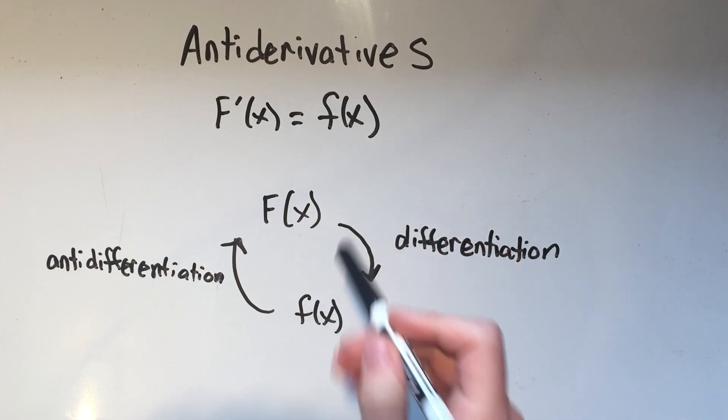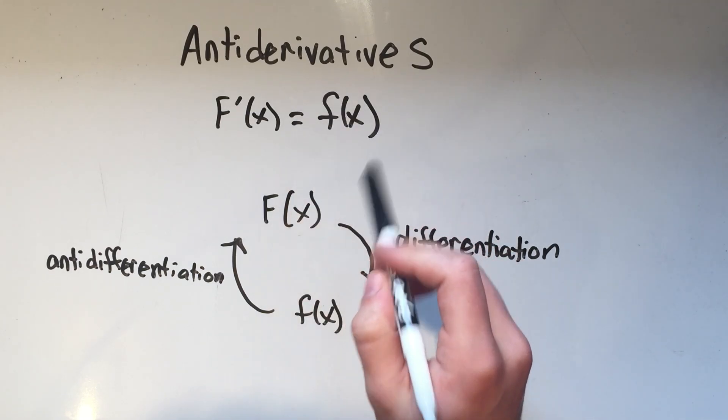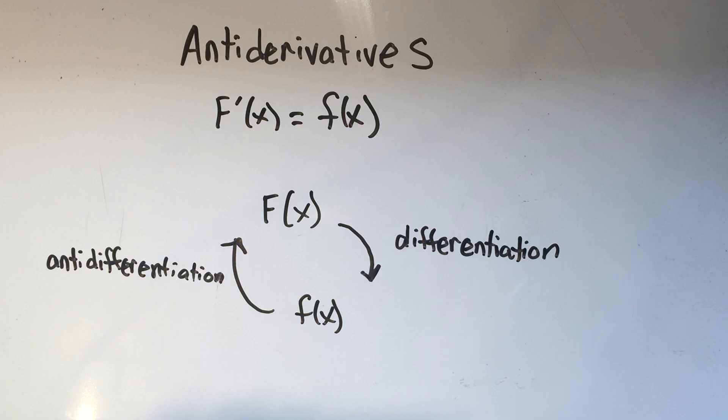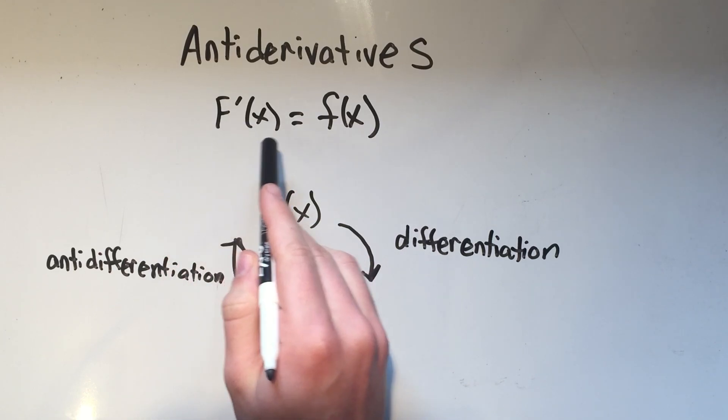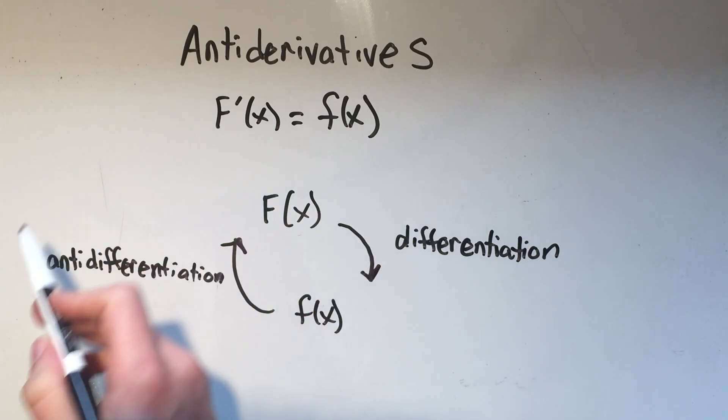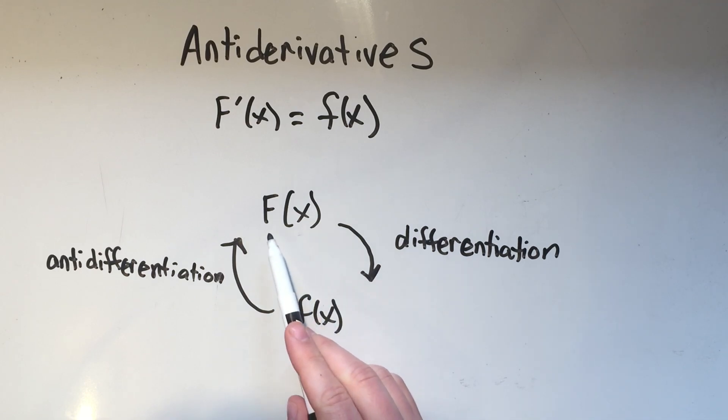Basically, if you've got a function f of x, the anti-derivative of f of x, which you usually call capital F of x, would be something that if you took the derivative of capital F of x, you would get your function. I think it's a little more clear once you look at this picture here. If you take the derivative of your capital F of x, you differentiate it, you would get little f of x. And if you took the anti-derivative of f of x, you would get capital F of x.